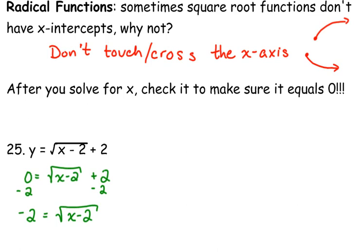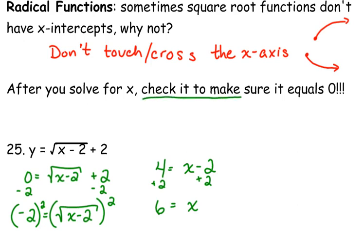Now, if you don't catch that, if you proceed to solve this by squaring both sides, that would be the next step, because it is a square root. To undo a square root, you square both sides. So, negative 2 squared is positive 4. The square root's gone on the right side. And then we want to add 2 to both sides, so we get 6 is equal to x. Now, this is what my note's about up here. After you solve for x, check to make sure it equals 0. Plug it back in.